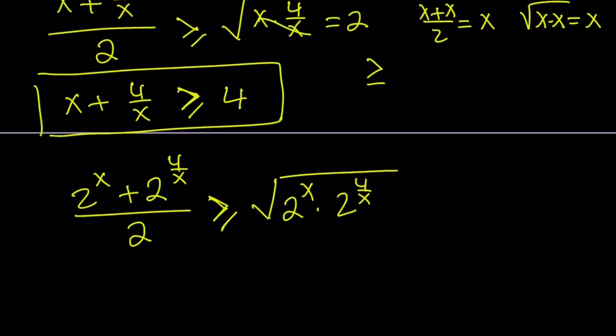By the way, 2 to the x and 2 to the power 4 over x are always positive, no matter what x is. So we don't need that requirement here, but we already have it. So x cancels out, and we end up with something nice.